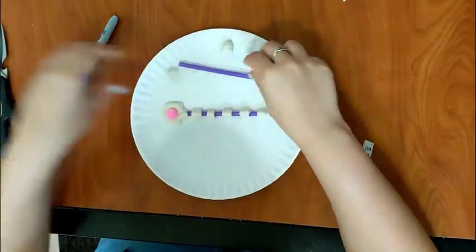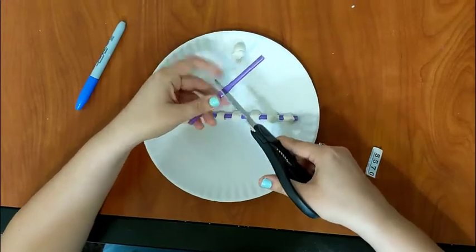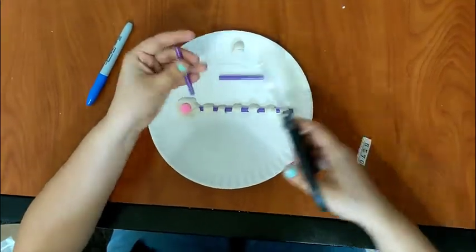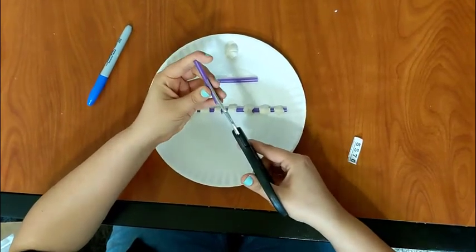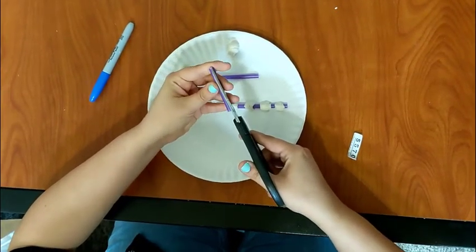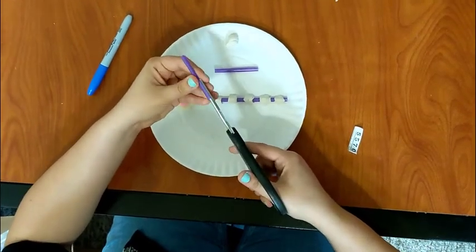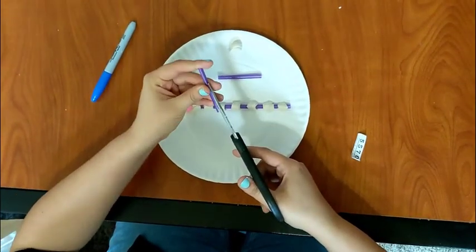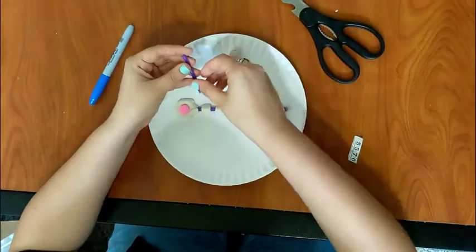So now we're going to take our scissors and cut up the other half of our straw down the center. And this is going to be our dendrites for our cell.